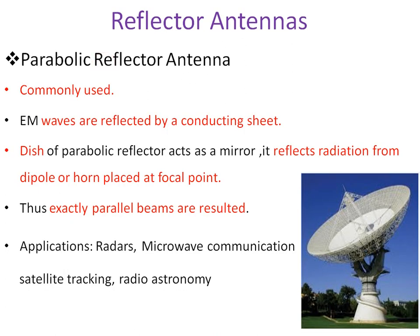Everyone has seen reflector antennas because the dish TV antennas we use are a kind of reflector antenna — specifically a parabolic reflector antenna, which is most commonly used. Electromagnetic waves are reflected by the conducting sheet. The dish of a parabolic reflector acts as a mirror — it reflects the radiation from the dipole or horn placed at a focal point, which avoids losses, and exactly parallel beams result because of this structure. Applications include microwave, satellite tracking, and radio.